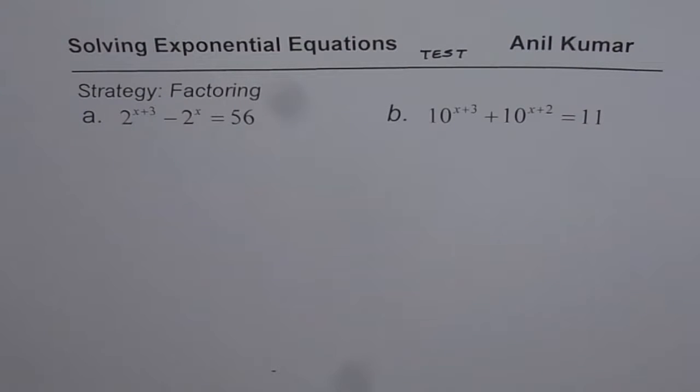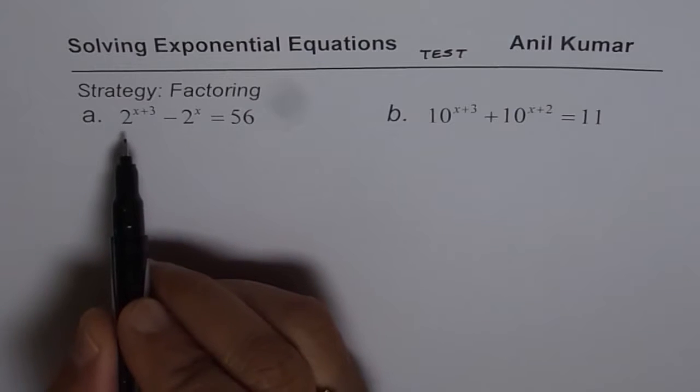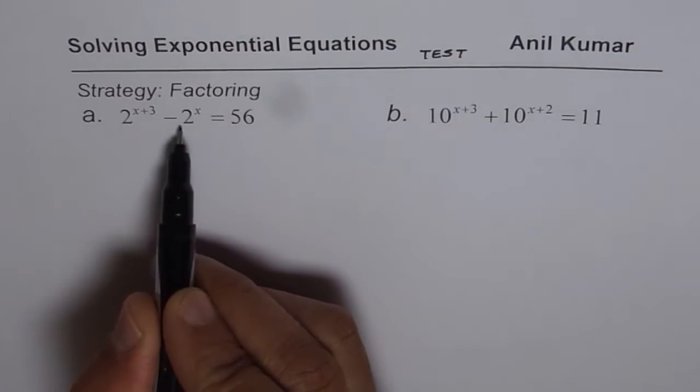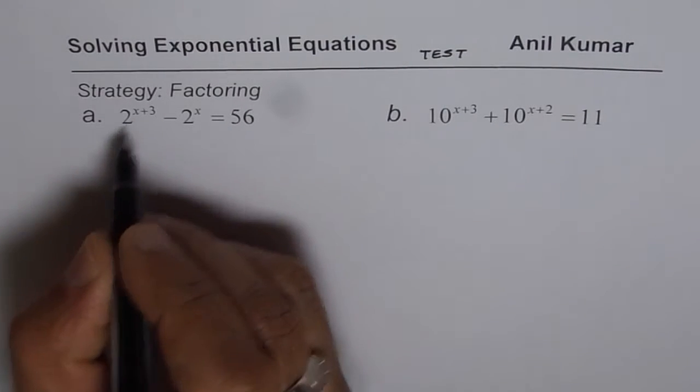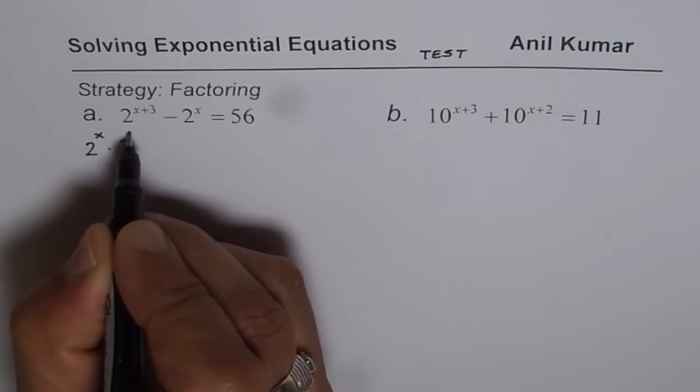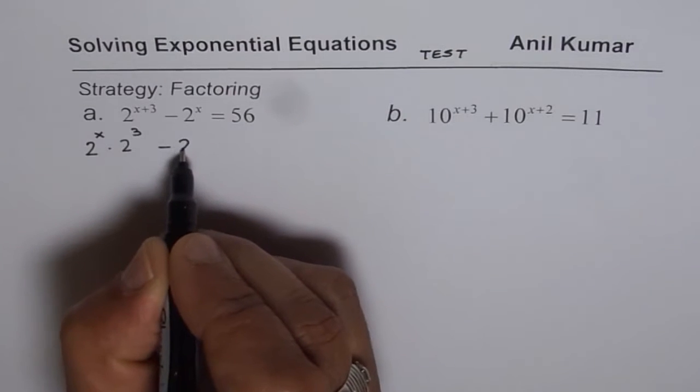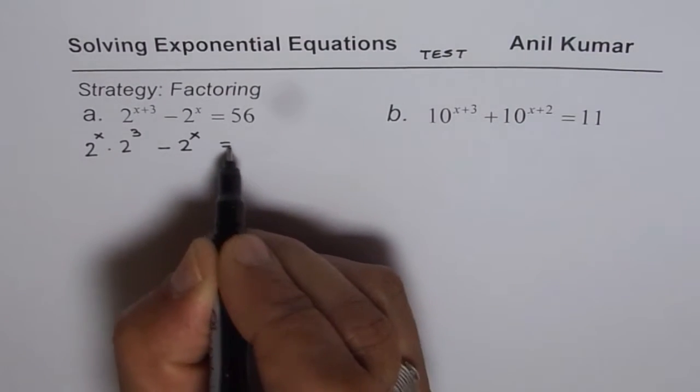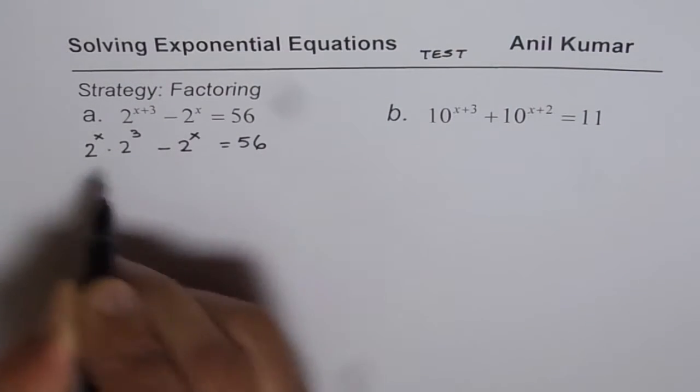You can solve these questions and then look into my solution. Now the strategy which I'm going to use here is factoring. The first question is 2 to the power of x plus 3 minus 2 to the power of x. You could consider this as 2 to the power of x times 2 to the power of 3 minus 2 to the power of x equals 56.